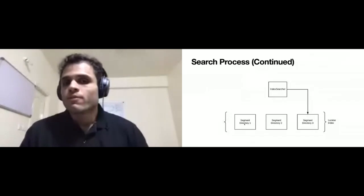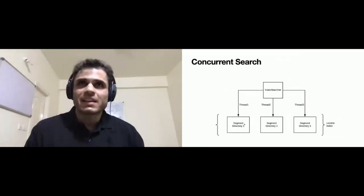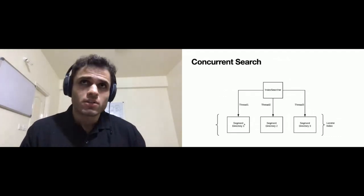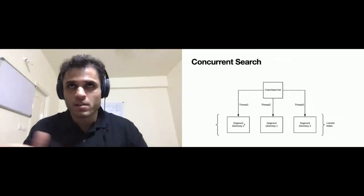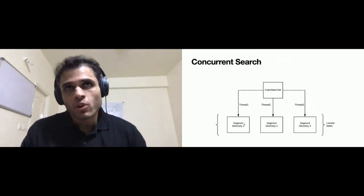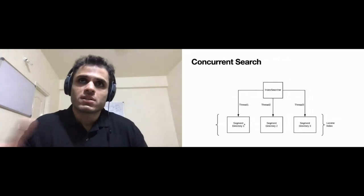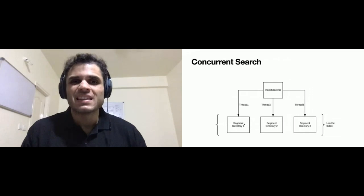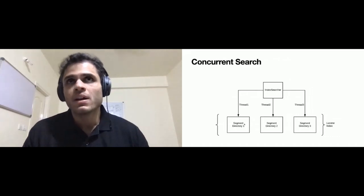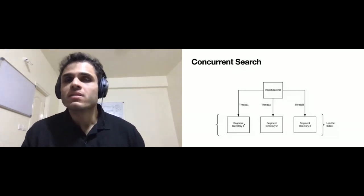That is the entire concept of Lucene's concurrent search. For a given query, you fire multiple threads — you schedule a number of threads. Each of those threads has a set of segments. In this example, you can imagine each thread has one segment. Thread 1 goes to that segment, collects the top 10 hits, performs a regular search. Thread 2 does the same on segment 2, Thread 3 on segment 3. Eventually these threads bring in all of their top hits. Then there's another step, which we call the reduce step. We look at all 30 top hits, identify the best 10 out of them, and that becomes the final result set. That, at a very high level, is how concurrent search works within Lucene.